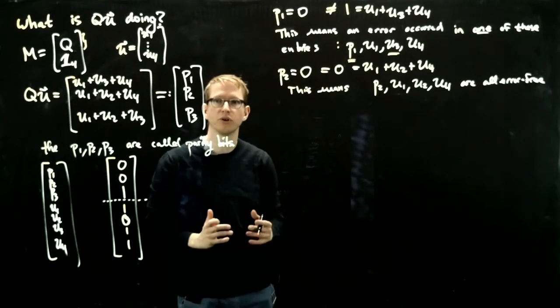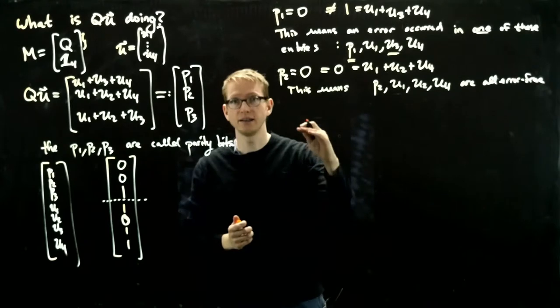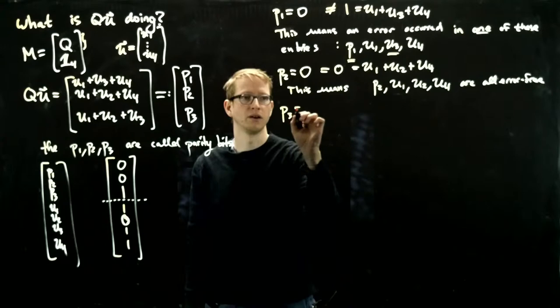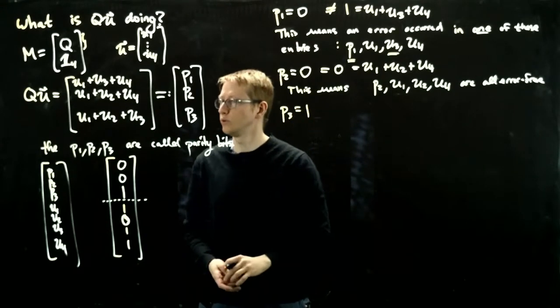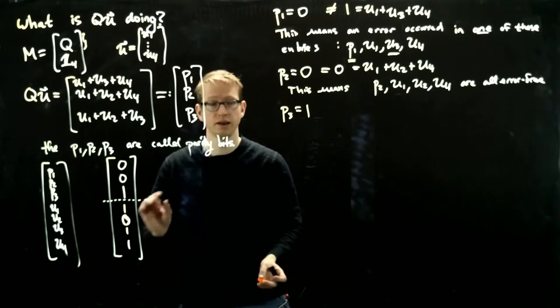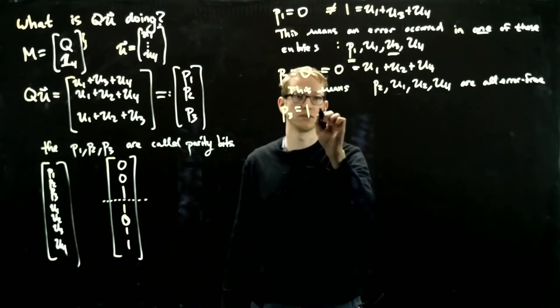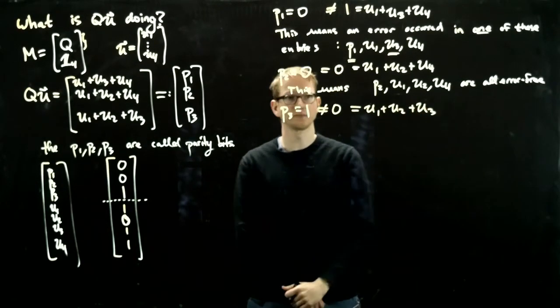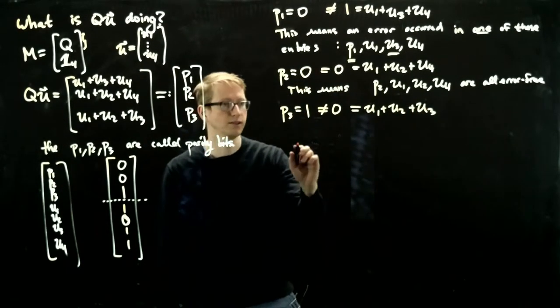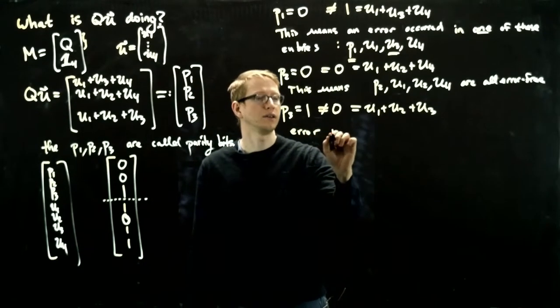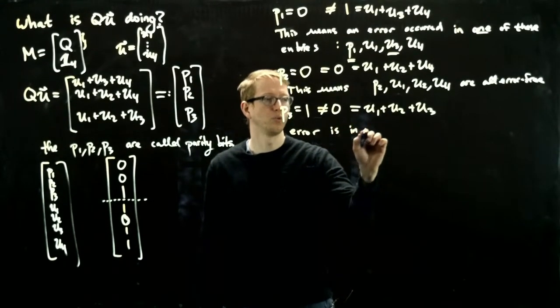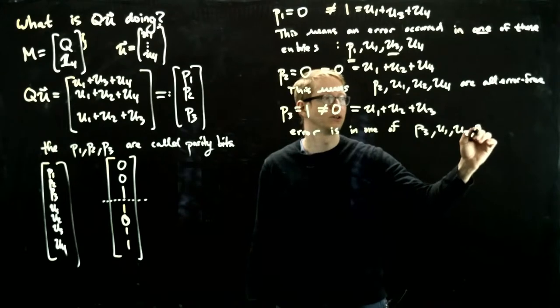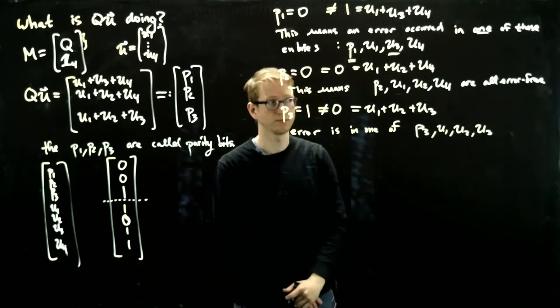We'll keep that in mind when we go to the last parity bit, which will isolate exactly where the error occurred. p3 is equal to, well from this it's 1, and is that equal to u1 plus u2 plus u3? u1 plus u2 plus u3 is equal to zero, so that's not equal, which is u1 plus u2 plus u3.